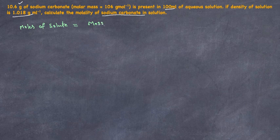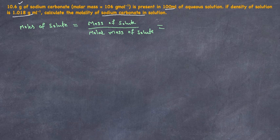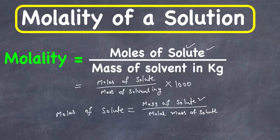Moles of solute equals mass of solute divided by molar mass of solute. Mass is 10.6 grams, divided by the molar mass which is 106 grams per mole. When we solve it, this gives us 0.10 moles.